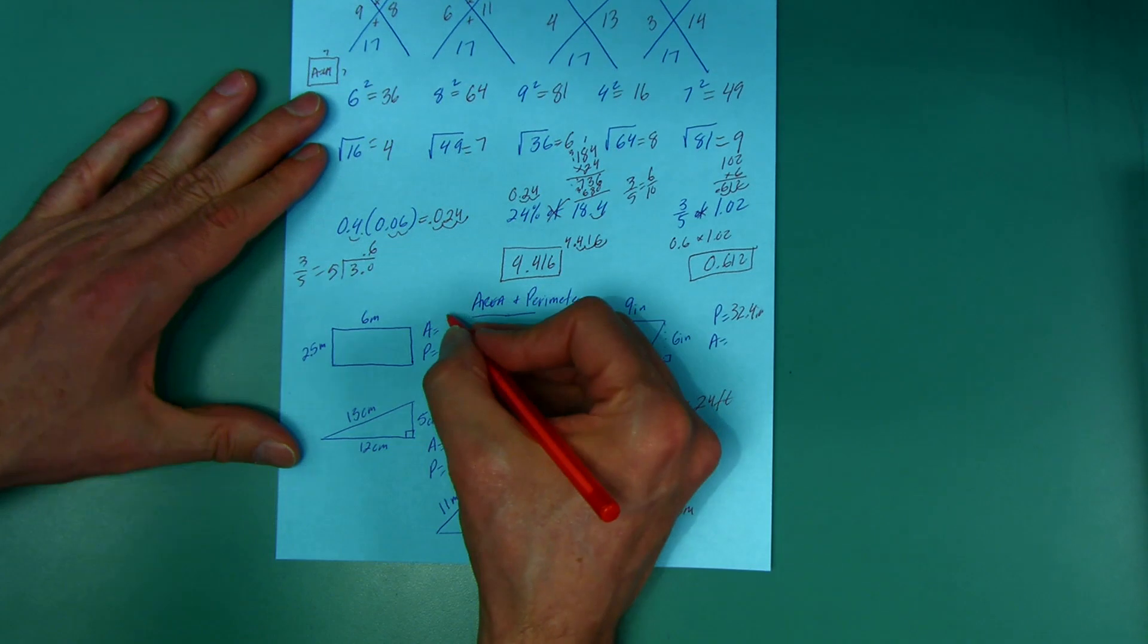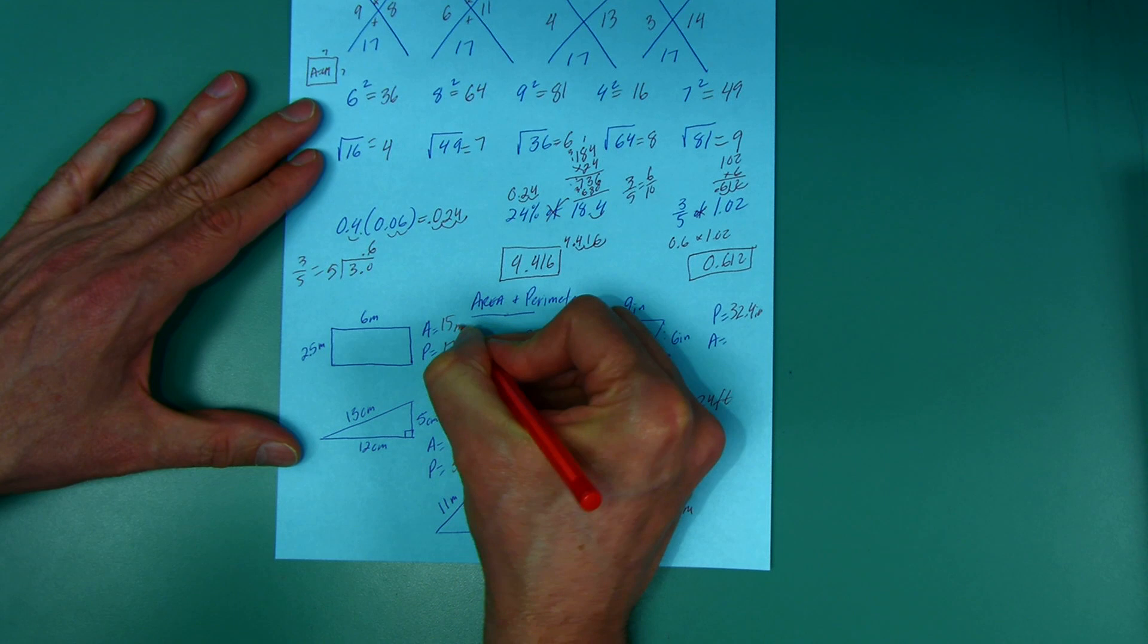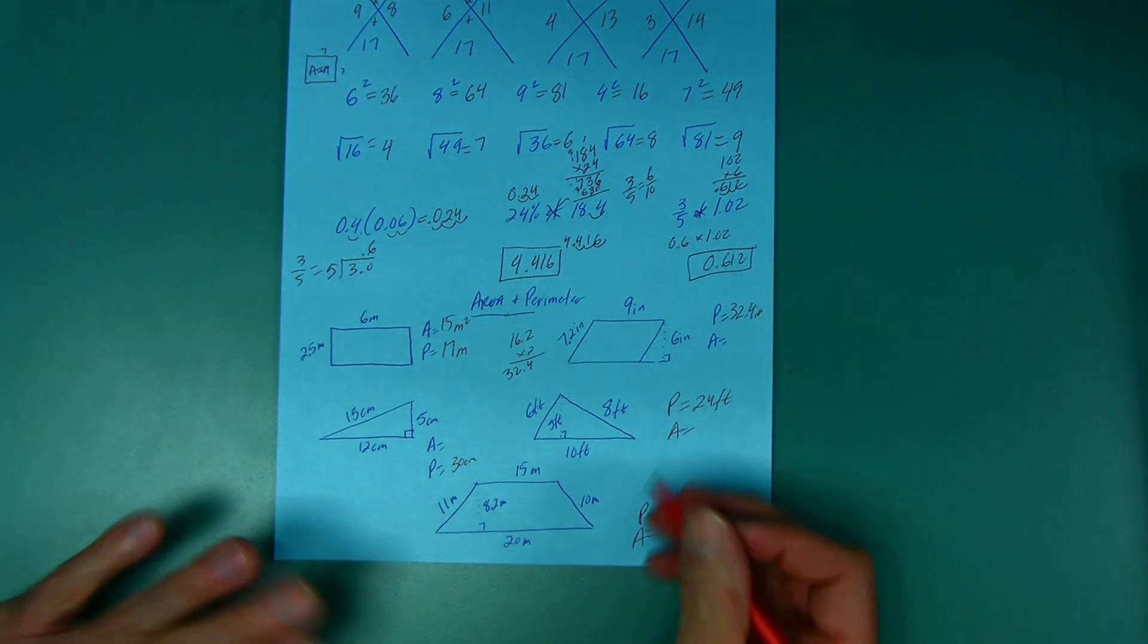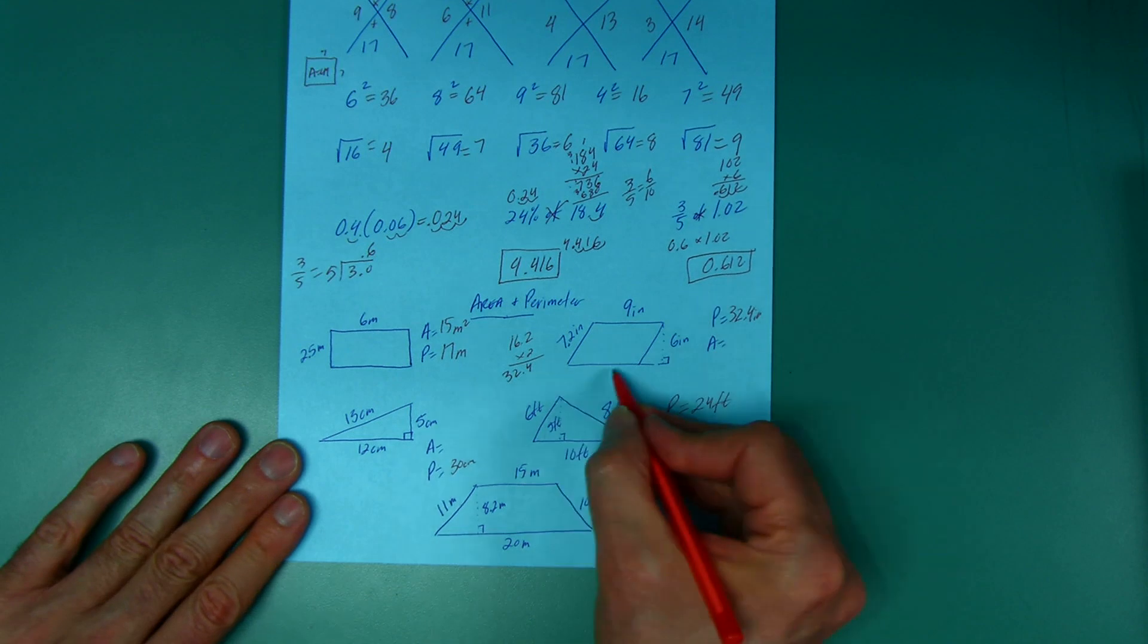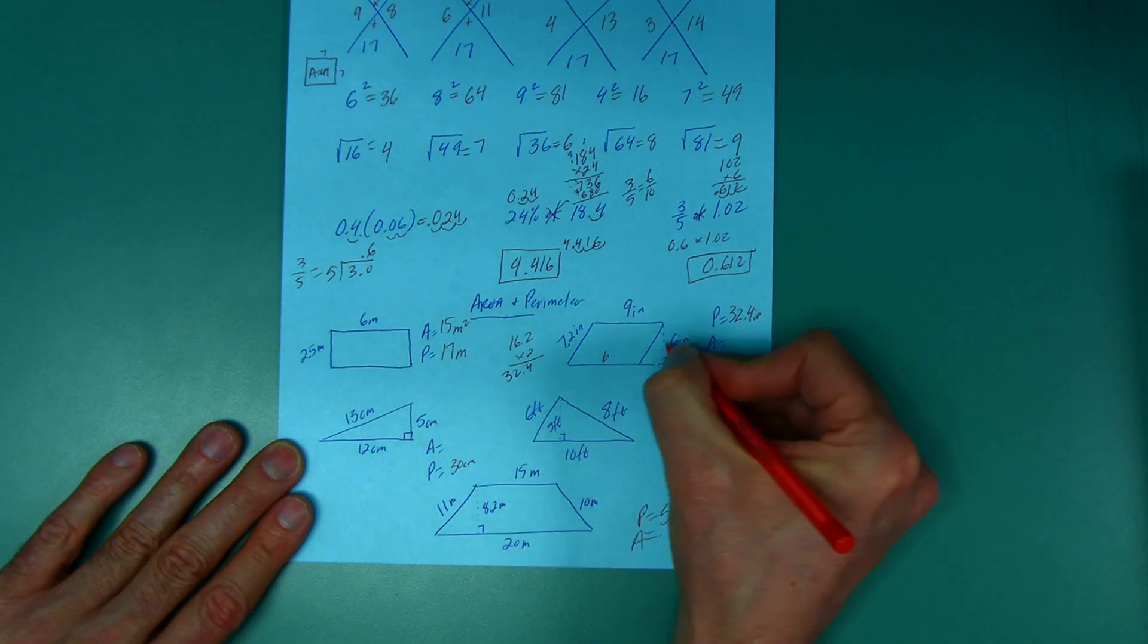All right, the area of a rectangle is just multiply the two sides. 6 times 25 is 150, but that's 2.5, so 15, and this is square meters.